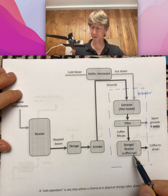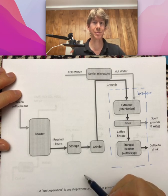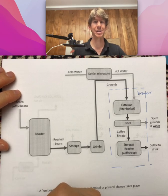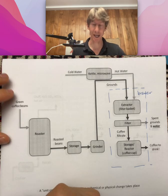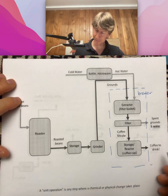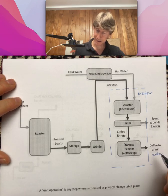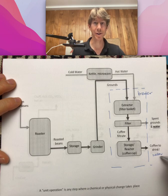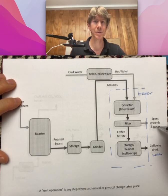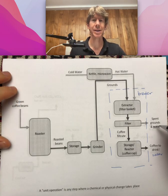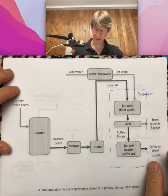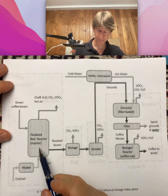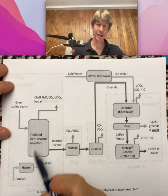Our storage reactor is a coffee cup in this process — that's what gets placed under the clever dripper. We call it storage because that's where you store your coffee, and chemical reactions take place in the coffee cup over time. Out comes coffee to drink. We've identified two places water exits: as the coffee brew, and absorbed into the spent coffee grounds. We'll add more detail to the roaster as well.